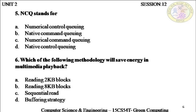The fifth question is NCQ. NCQ stands for native command queuing, option B. It is a technology which allows the hard disk to determine in which order the read and write operations have to take place. So you leave the entire decision making of the order of read and write operations to the hard disk. If you have random IO operations in your applications, then you need to make use of NCQ in order to increase energy efficiency.